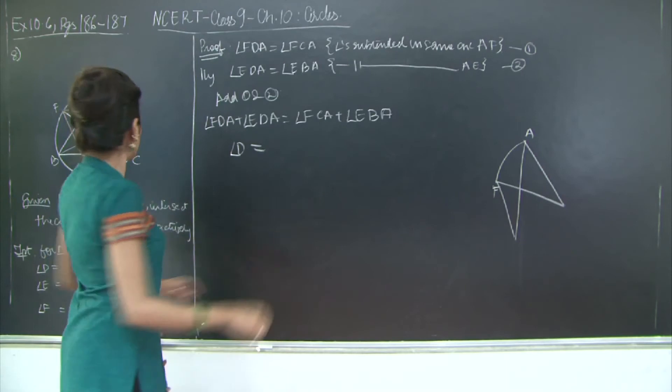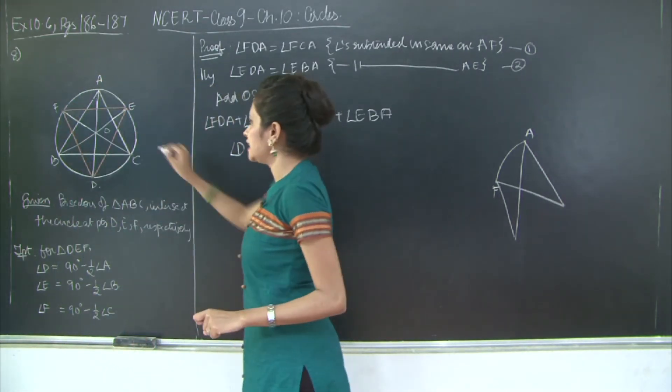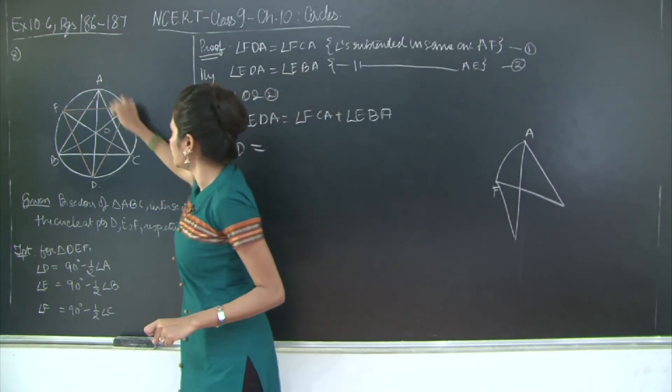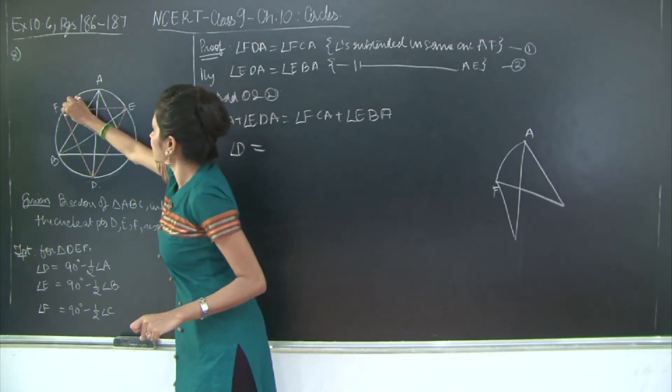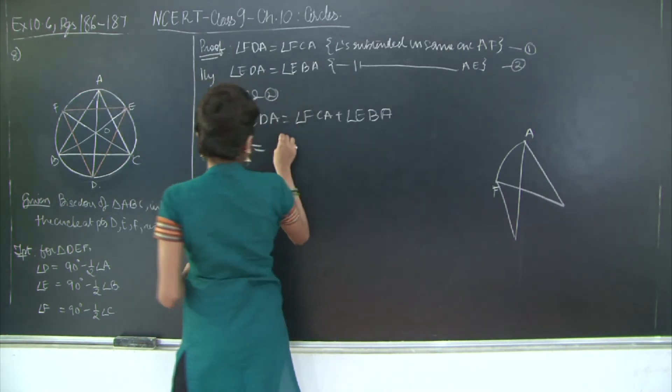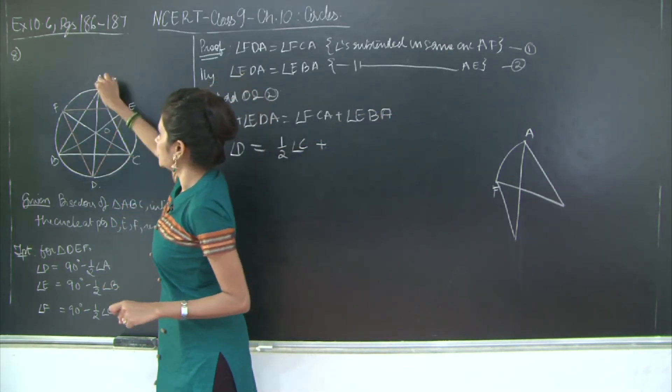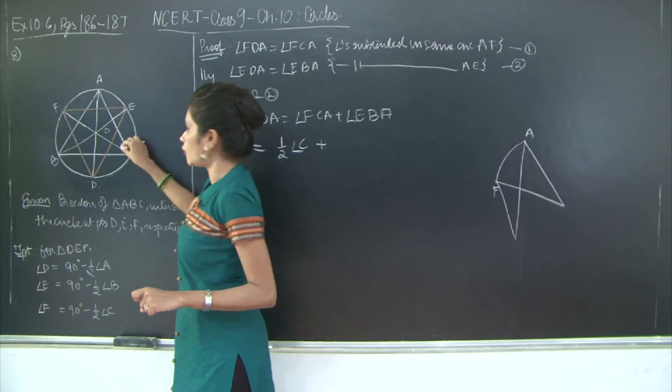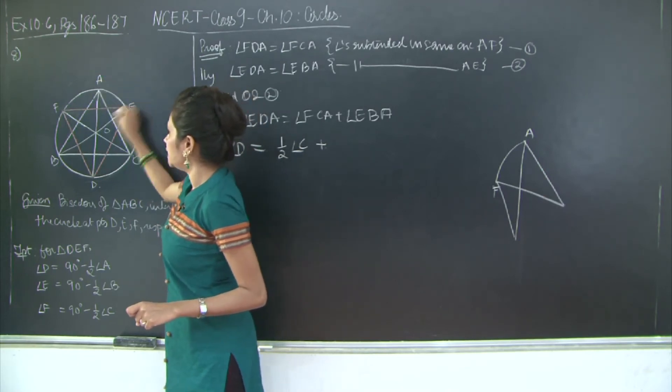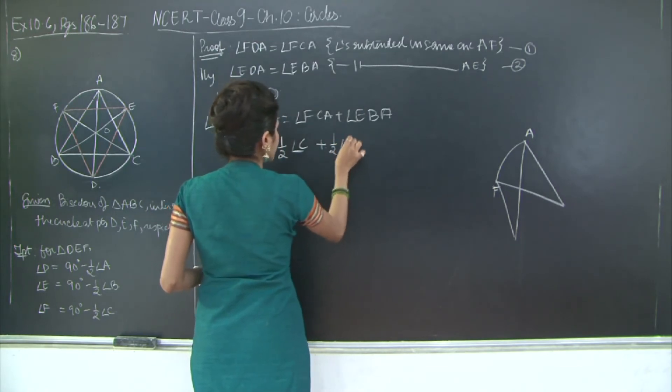And angle FCA, if you take a look at FCA, this is half of angle C. Why is it half of angle C? Because CF is the bisector of angle ACB. So this angle FCA is going to be half of angle C plus EBA. EBA is half of angle B of triangle ABC because BE is the bisector of angle ABC. Therefore EBA is half of angle ABC, so this is half of angle B.